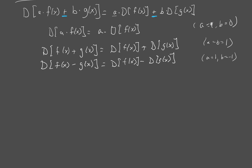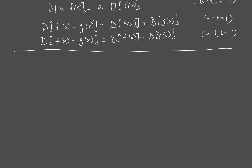We've also got some special functions. We're not going to talk about trig functions yet — those come in a later section — but we will talk about exponential functions. Not logarithms yet, just exponentials. The derivative of an exponential function a to the x equals the natural log of a times a to the x. The special case is when a equals e, and then the natural log of e is just 1. So the derivative of e to the x equals e to the x — taking the derivative of the exponential function with the natural base doesn't change anything.